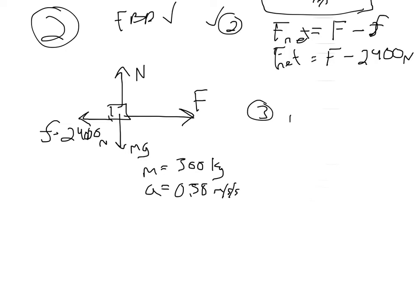Third step is to set up Newton's second law. Net force is equal to the mass times acceleration. Now, I know the mass. I know the acceleration. I know at least the net force is going to be whatever that is, so I'm just going to plug that in over here, F minus 2,400 newtons. That has to be equal to my mass, 300 kilograms, times my acceleration, 0.58.